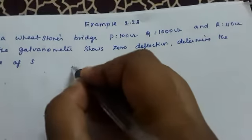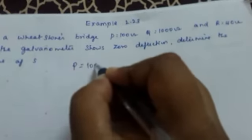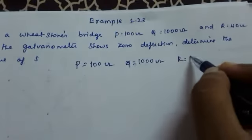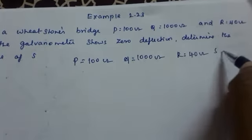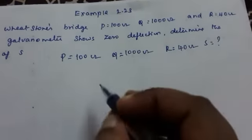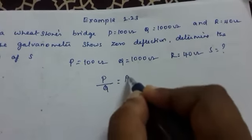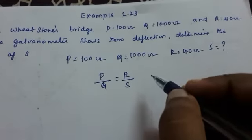What is given here is P equals 100 ohm, Q equals 1000 ohm, R equals 40 ohm, and we have to find the value of S. According to Wheatstone bridge, P by Q equals R by S. This is the balance condition.